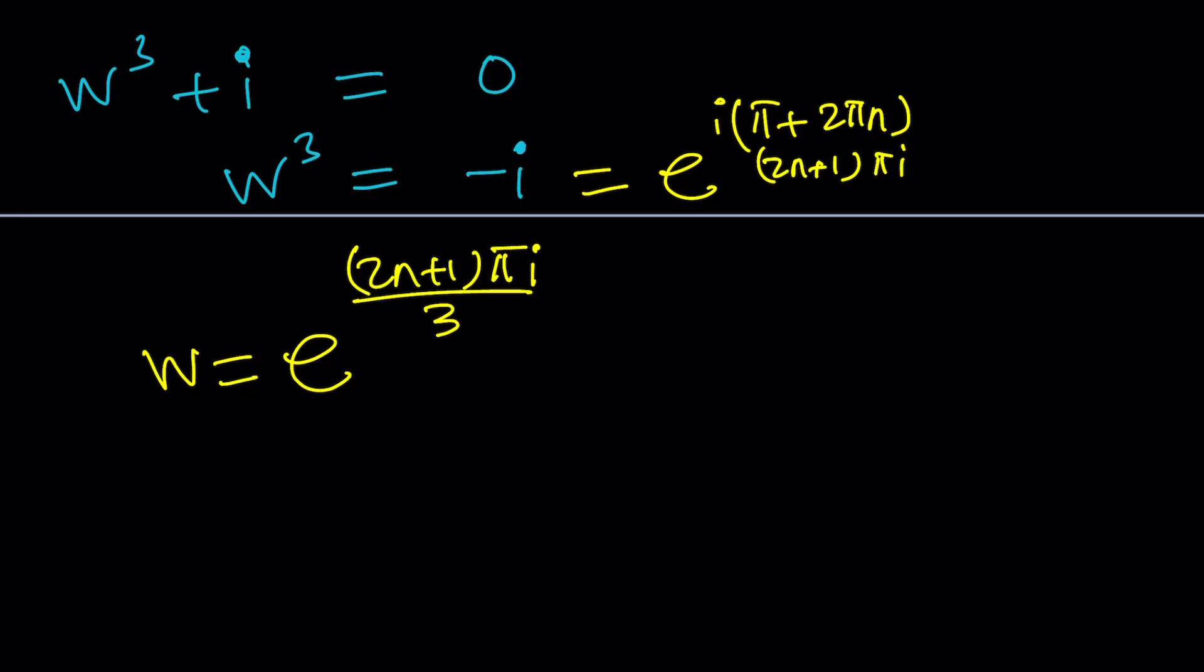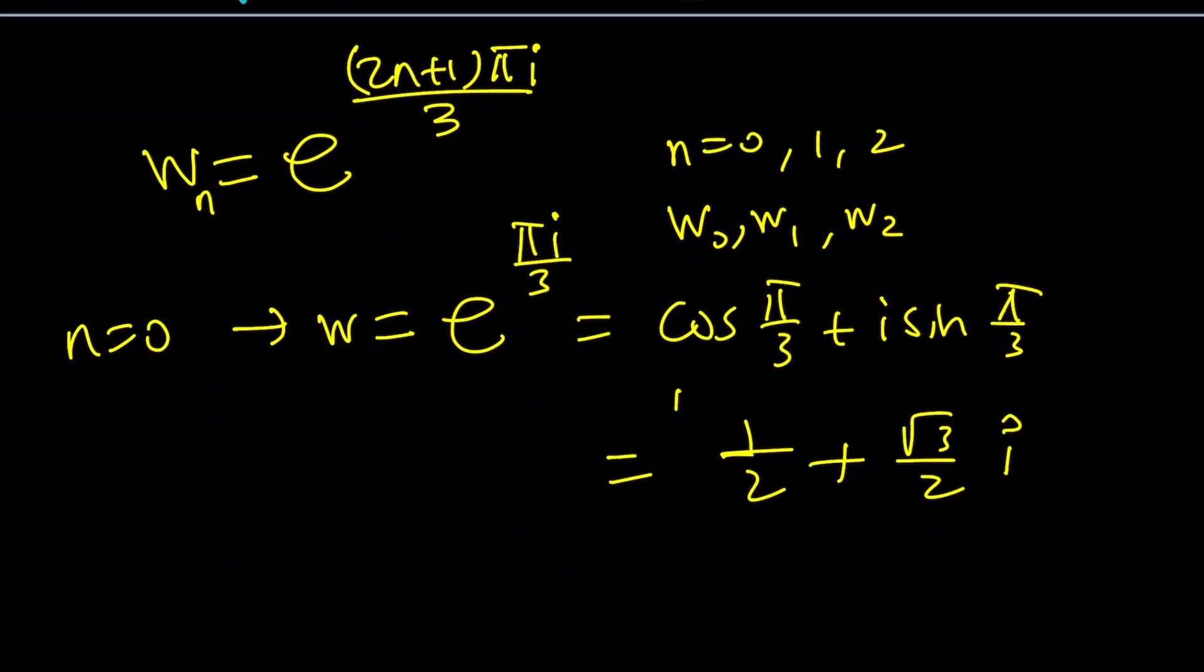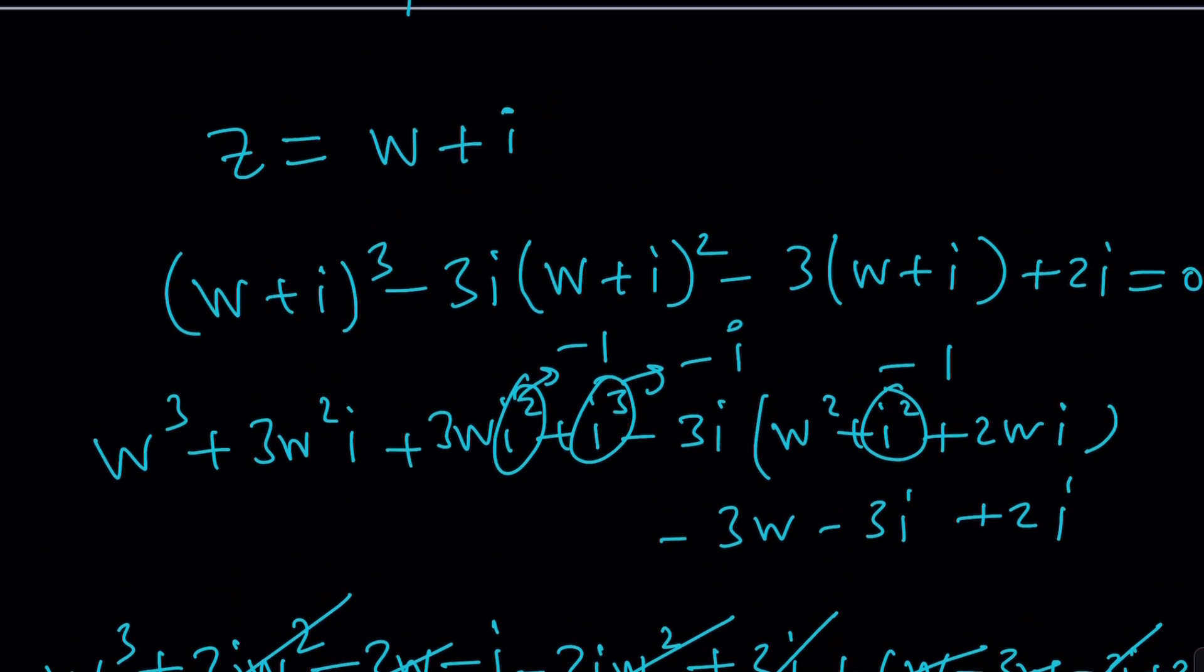So these are the w values but of course n equals 0, 1, and 2. There's going to be three values. In this case there's going to be actually three because we're taking cube roots. We have w0, w1, and w2 as the cube roots. If you replace n with 0 you're going to get w equals e to the power πi over 3. That indicates π over 3 which is 60 degrees, so cosine of 60 degrees plus i sine of 60 degrees. Cosine 60 is the same as sine 30 which is 1 half. This is going to be 1 half plus root 3 over 2i. That's one of the cube roots. And of course you can find the other cube roots the same way.